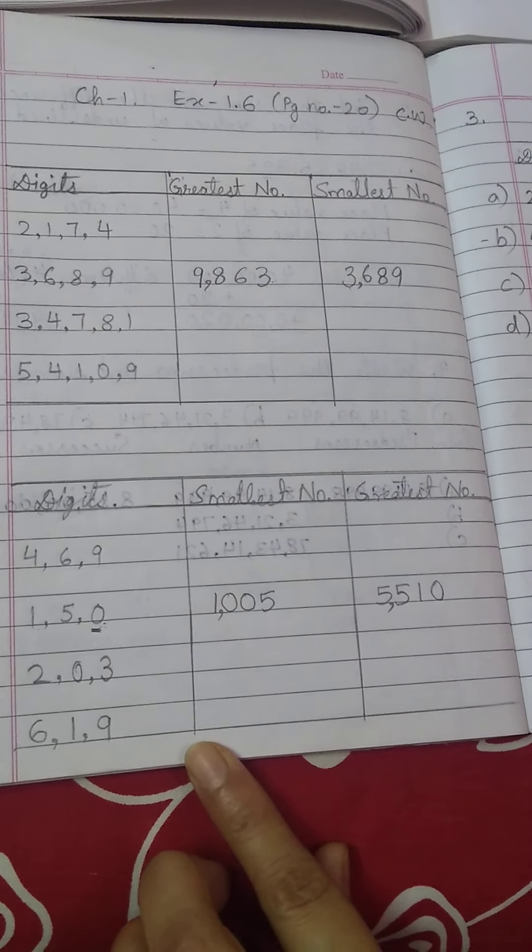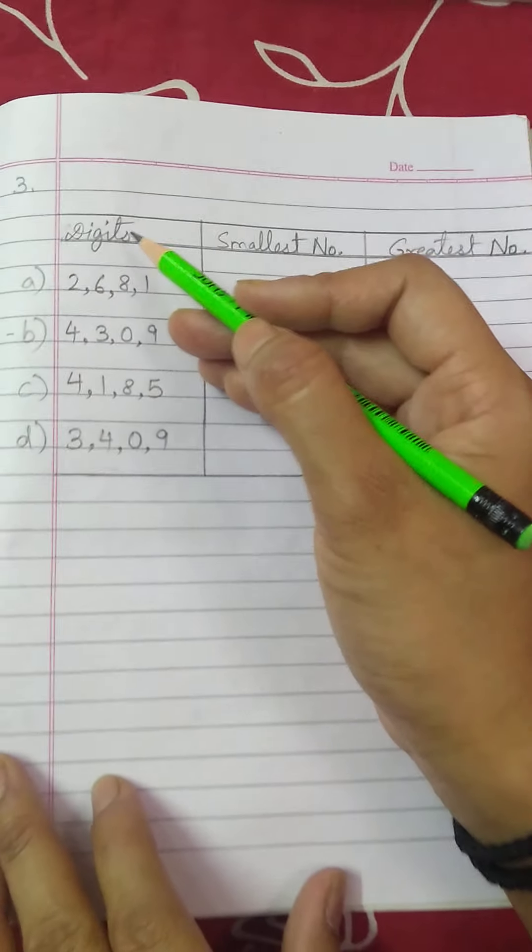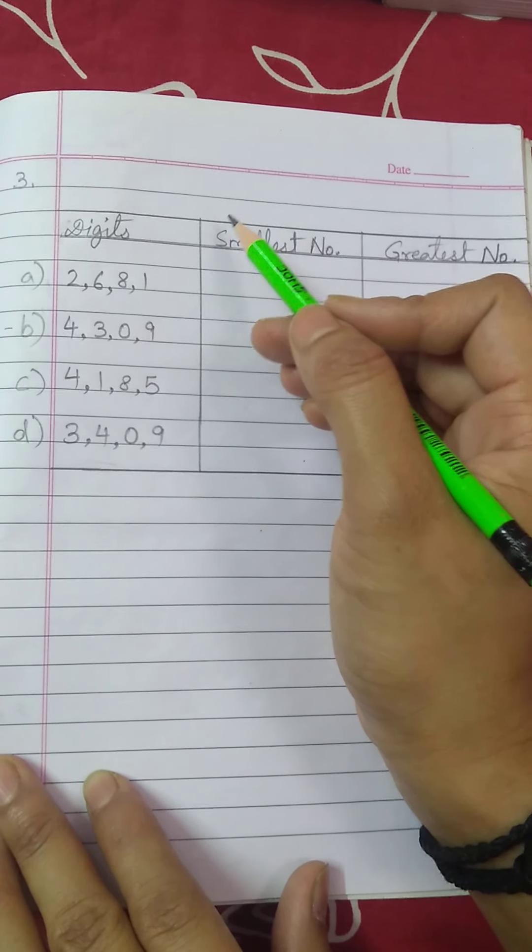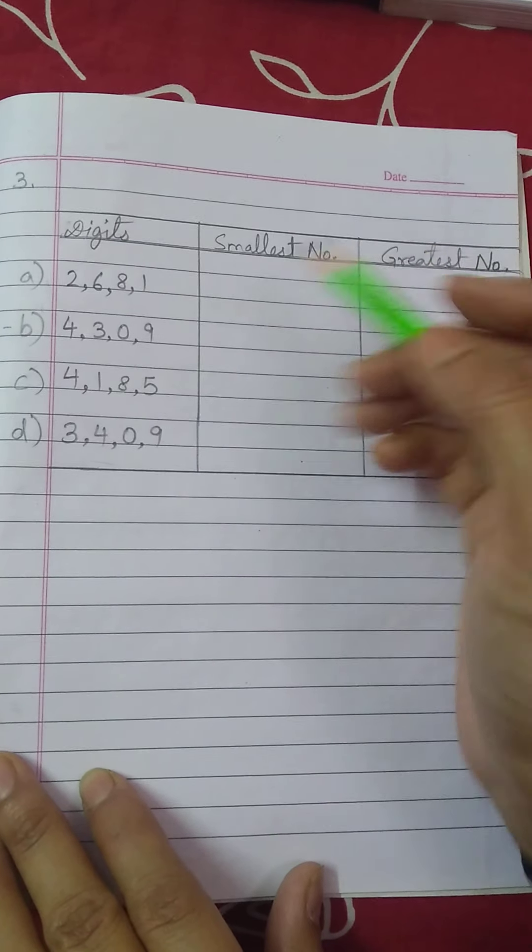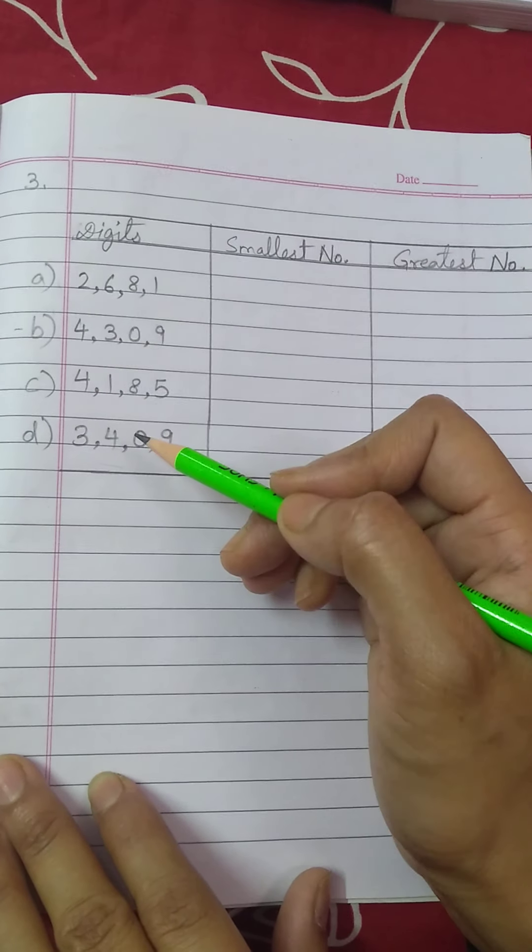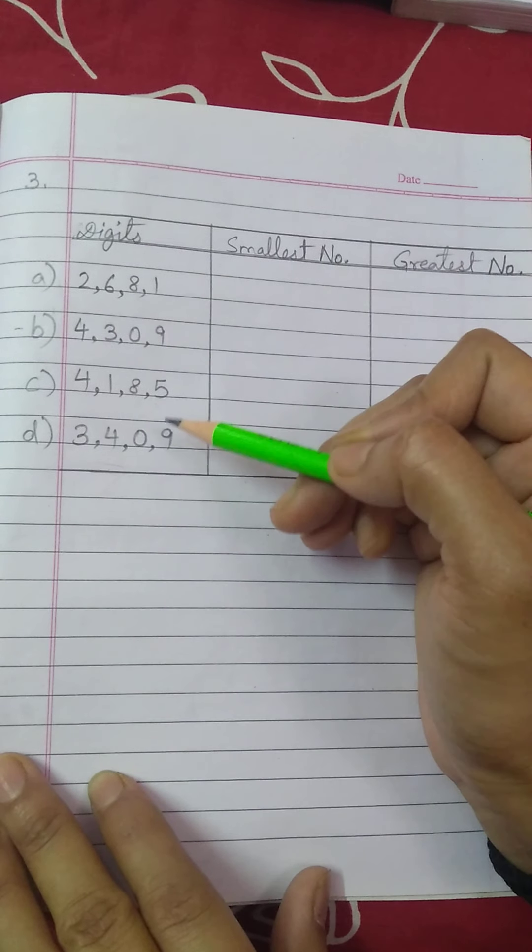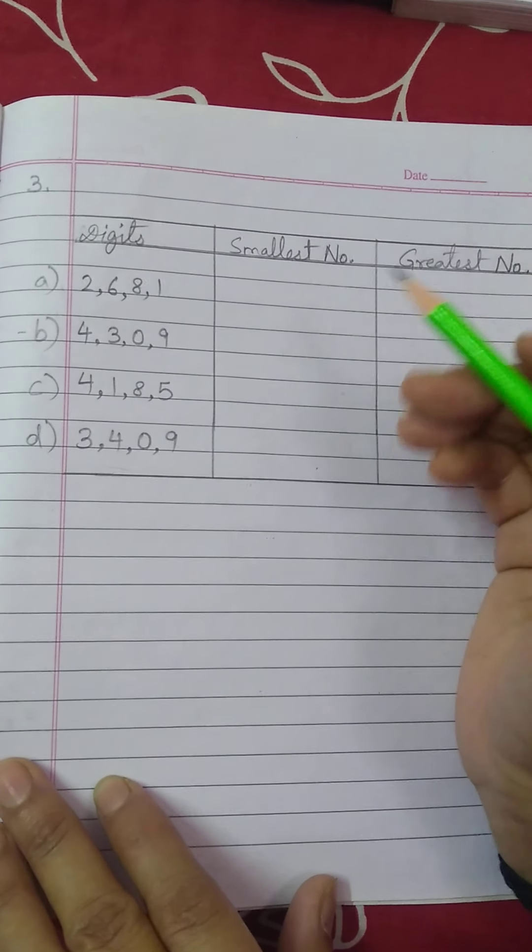Try these parts yourself and then be confident doing these questions. Now, question number 3 of the same exercise is, write the smallest and greatest 5 digit number using the given digit at least once. So, kam se kam ek baar aapko use karni hai yeh wali digits aur 5 digit number banana hai. Dekho, wahi problem aayi na, yahan par 4 digit dekhe hain, aapko banana hai 5 digit, same rule we will apply.